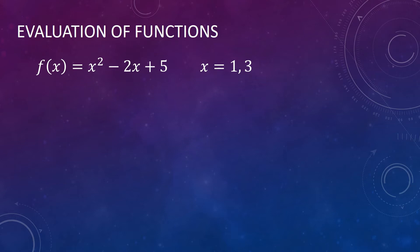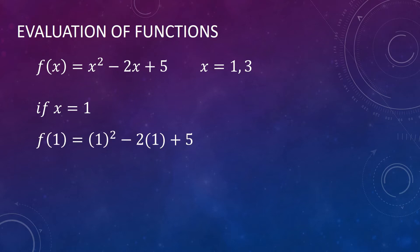Another example for evaluation of functions: let's say our f of x is a trinomial x squared minus 2x plus 5, and our x will be equal to 1 and 3. The procedure is just the same — all you have to do is substitute the value of your x into your function. So if x is equal to 1, f of 1 will be equal to 1 squared minus 2 times 1 plus 5. Simplifying this, we will have f of 1 equal to 1 minus 2 plus 5, so f of 1 is equal to 4.